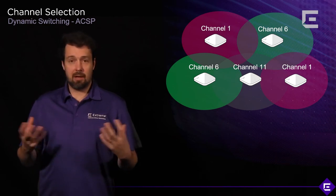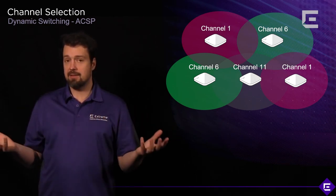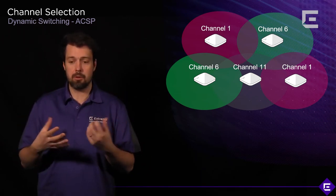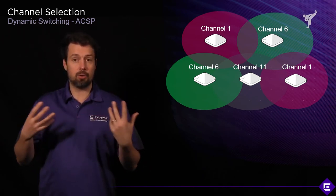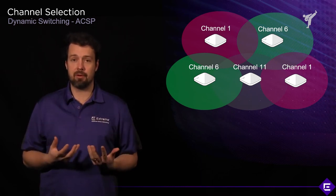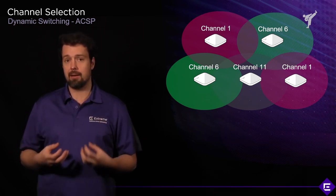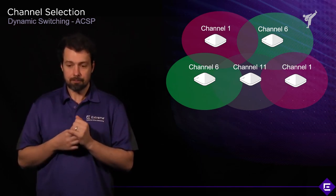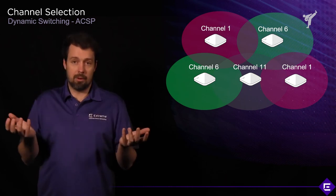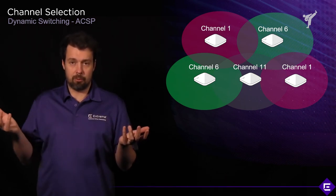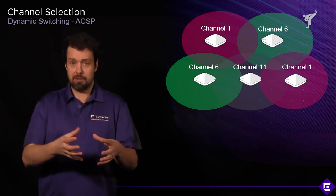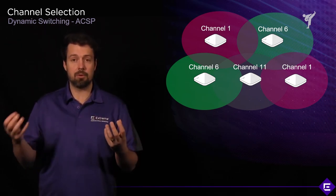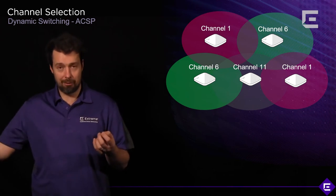When we discussed cooperative control protocols, we said they work out of the box as long as the access points are members of the same hive, use the same hive key, and can communicate with each other. They will negotiate and determine the correct channel and power for each radio. By default, every AP runs the cooperative control protocol for channel and power selection called ACSP — Auto Channel and Power Selection Protocol.